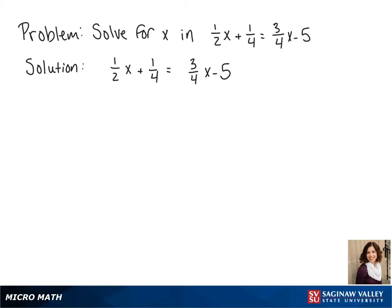Our first step is to get rid of these fractions. The number that we can multiply every fraction by to make them all cancel is 4. That 4 gets distributed to every term.